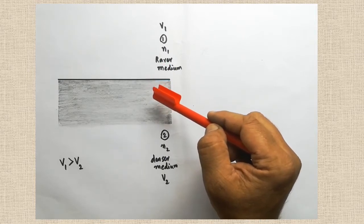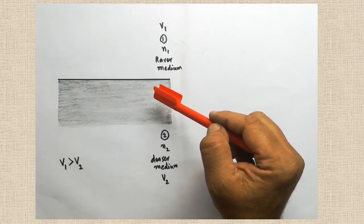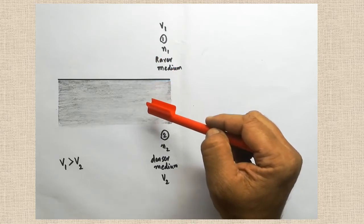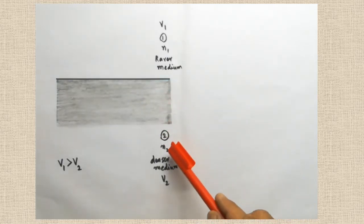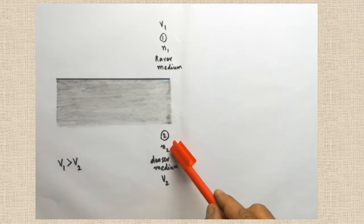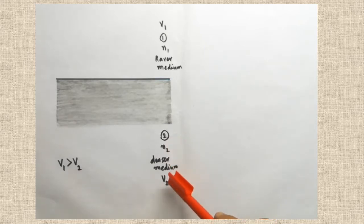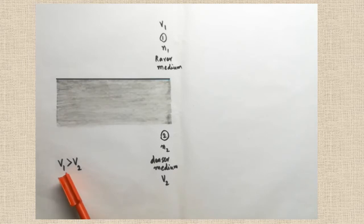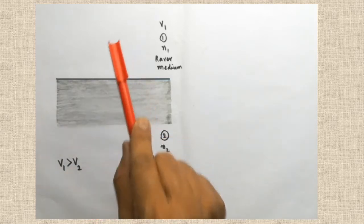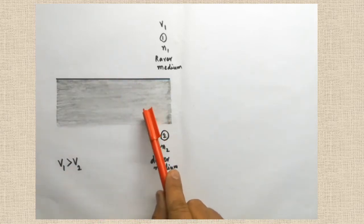Light has to travel from one medium to another medium — only then the light ray will get bent. That's why two mediums are taken here. The second medium is a denser medium; its refractive index is N2, and when light travels there, the velocity of light will be V2. As per wave theory, the velocity of light in the rarer medium is greater than in the denser medium.